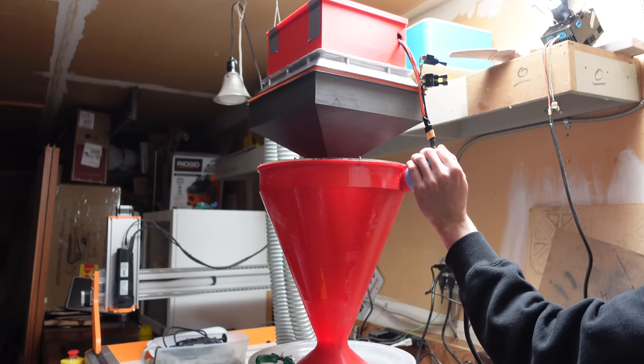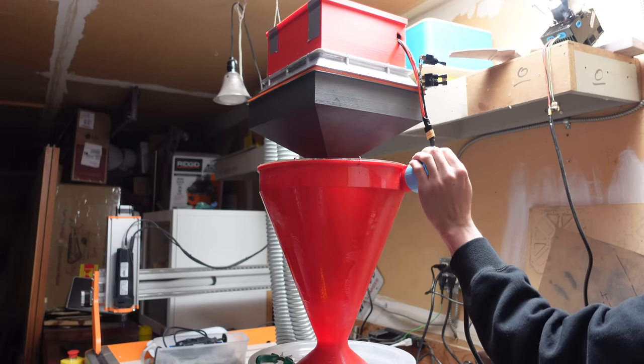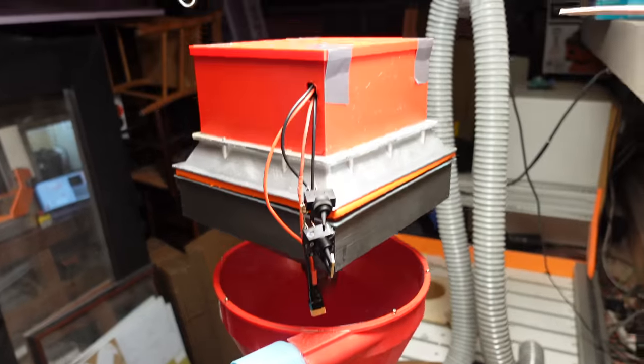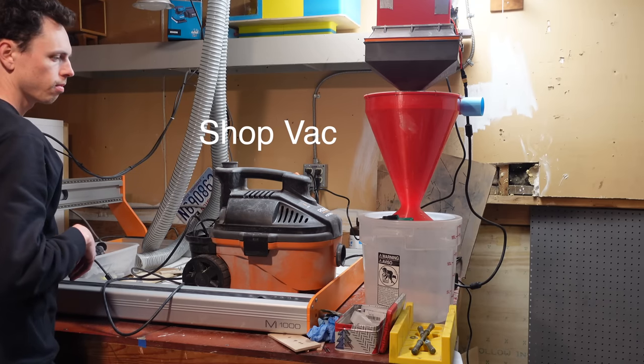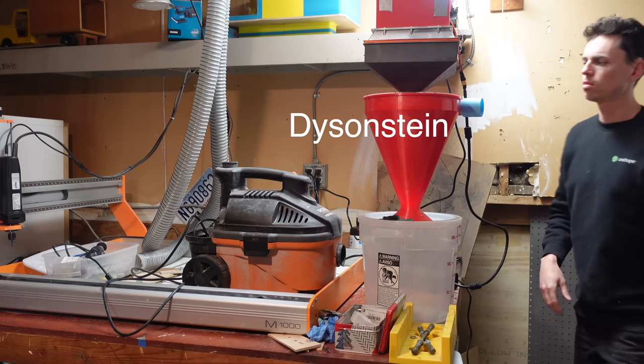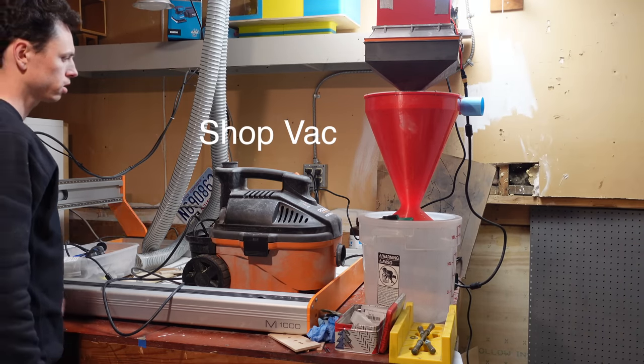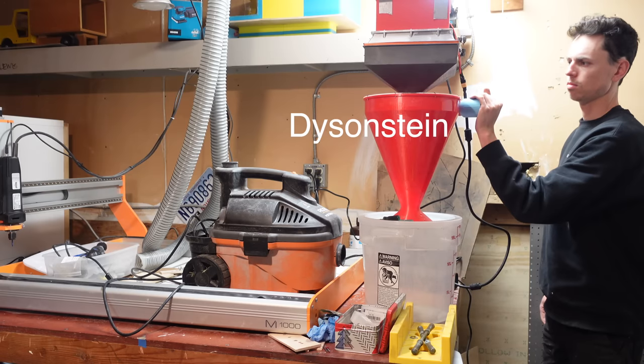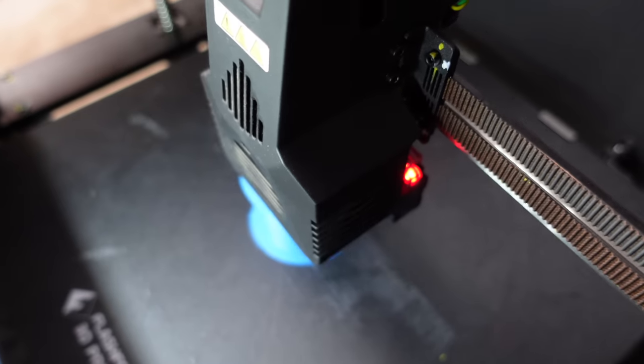So the point of using the Dyson motors instead of a shop vac was to make it more compact and quieter. Here's a noise comparison of the shop vac versus the new one that was recorded on a microphone with fixed levels, so that there's no auto adjustment going on. You can clearly hear that it's a bit quieter. Still pretty loud, but definitely an improvement.